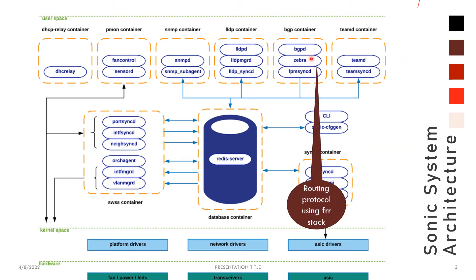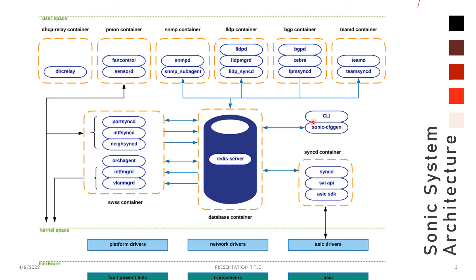Then we have the BGP container — it is actually not only BGP, it runs all the routing protocols. It is a full routing stack running the FRR stack, so you can run OSPF, BGP, and everything in this container. Then we have TeamD, which is the Linux-based LAG — an open source LAG already present in Linux, running in this container. All these are application-level components.